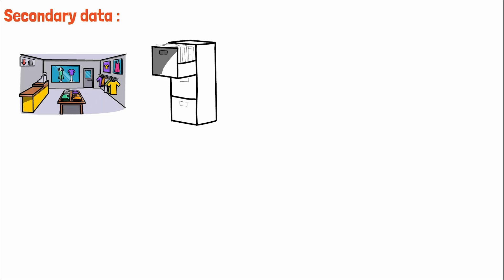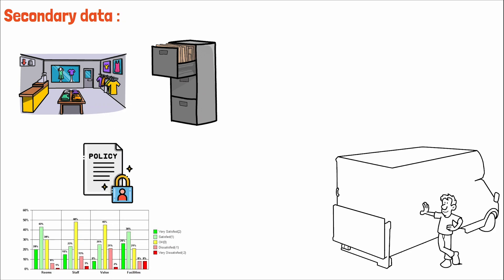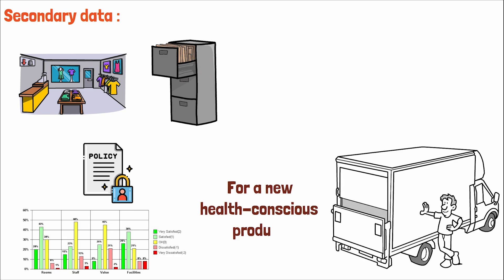Secondary data, on the other hand, is like a ready-made garment. It's already available and can be a cost-effective alternative to primary data. A company might examine existing employee morale surveys to gauge the impact of policy changes, or a food distributor may analyze government health statistics to identify potential markets for a new health-conscious product.